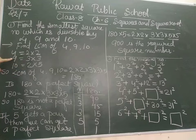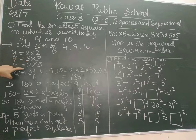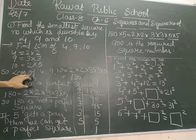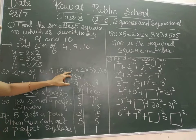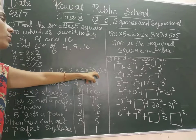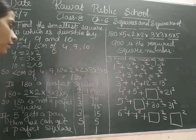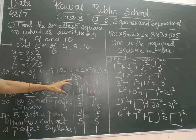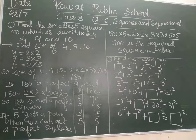So 4 is 2 into 2, 9 is 3 into 3, and 10 is 2 into 5. So the LCM of 4, 9 and 10 will be 2 into 2 into 3 into 3 into 5. So we got 180.